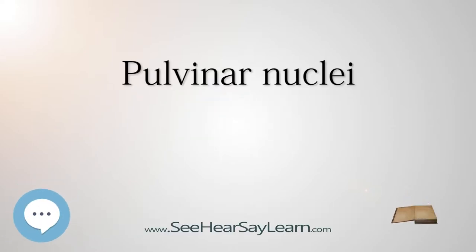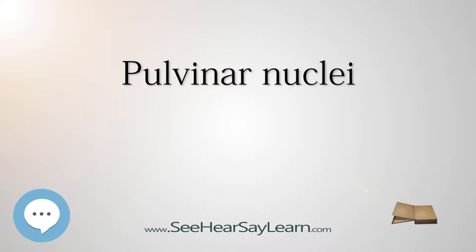The pulvinar nuclei, or nuclei of the pulvinar (nuclei pulvinaris), are the nuclei — cell bodies of neurons — located in the thalamus, a part of the vertebrate brain. As a group they make up the collection called the pulvinar of the thalamus (pulvinar thalami), usually just called the pulvinar. The pulvinar is usually grouped as one of the lateral thalamic nuclei in rodents and carnivores, and stands as an independent complex in primates.